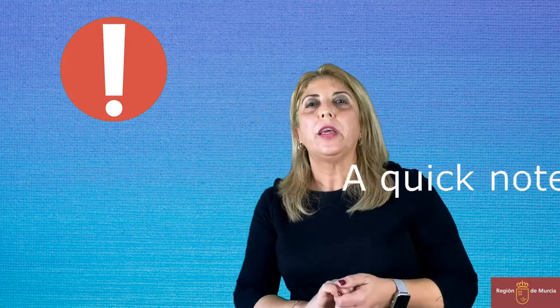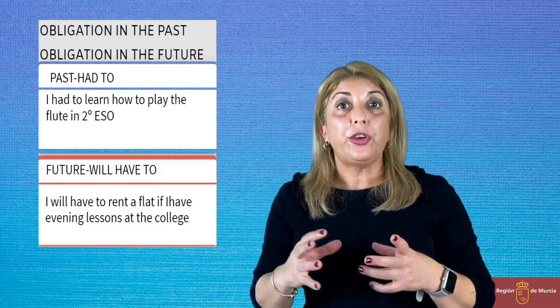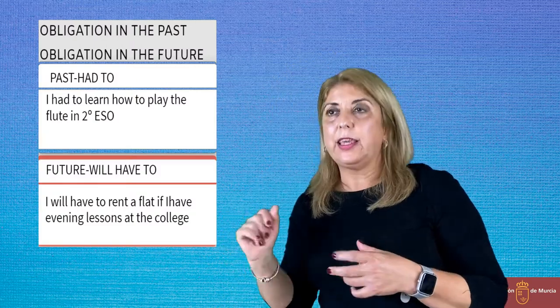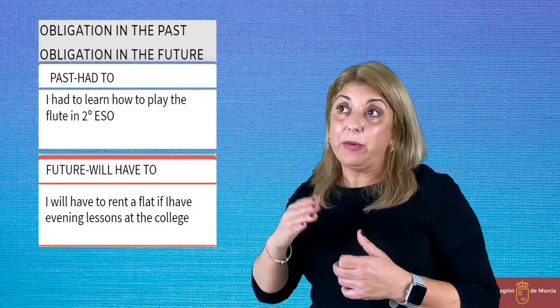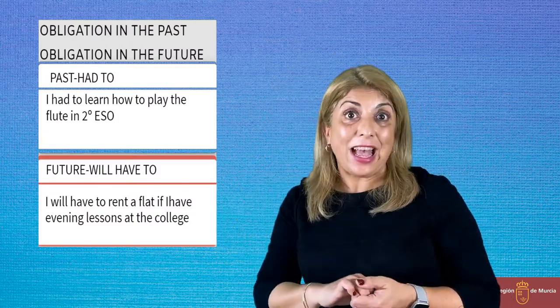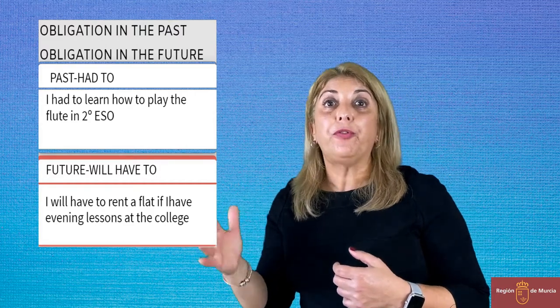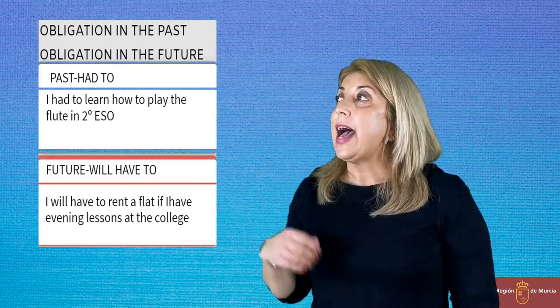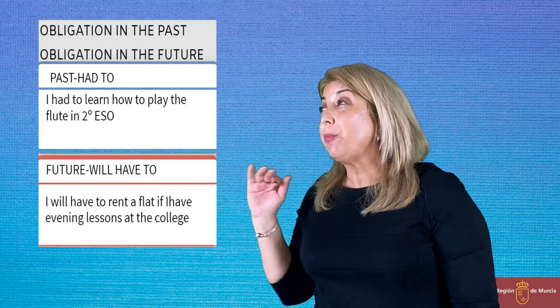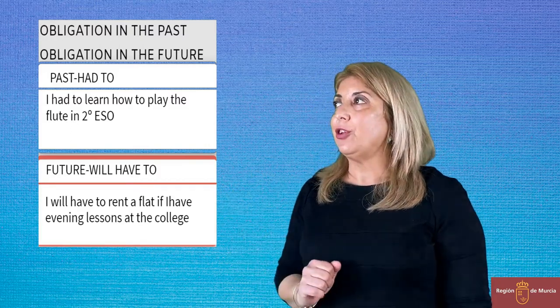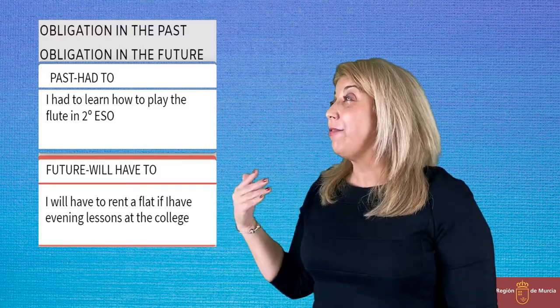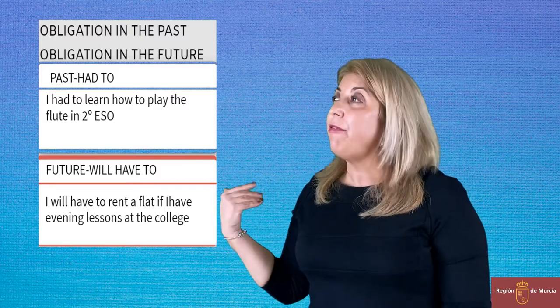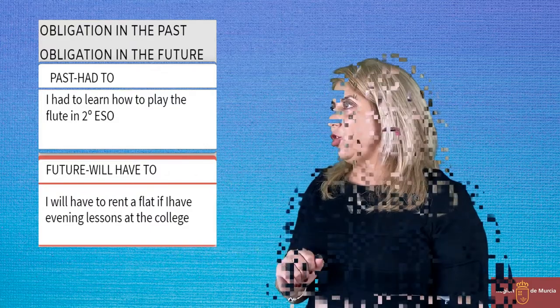A quick note for you: if you use 'have to' in the future or in the past, you have a different form. You use 'had to' for obligation in the past and 'will have to' for obligation in the future. For example: 'I had to learn to play the flute when I was at school' or 'I will have to attend if I have evening lessons at the college.'